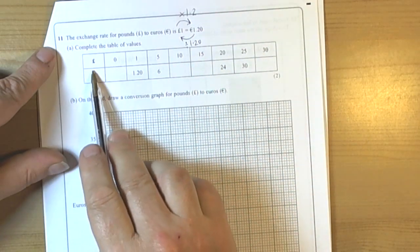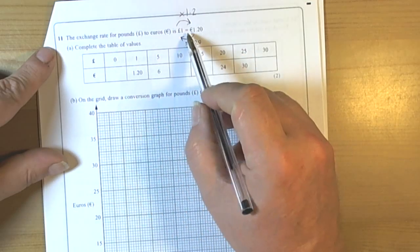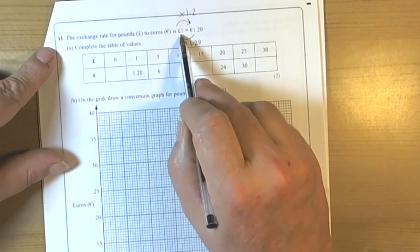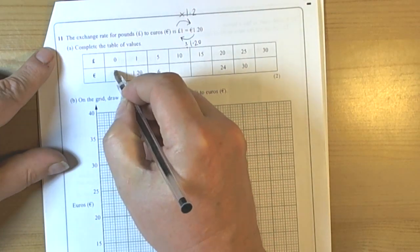So that's just to complete a table in preparation for drawing a conversion graph. So if we look at the rule then it's telling us that to get pounds into euros we multiply by 1.2. So 0 times 1.2 is 0.